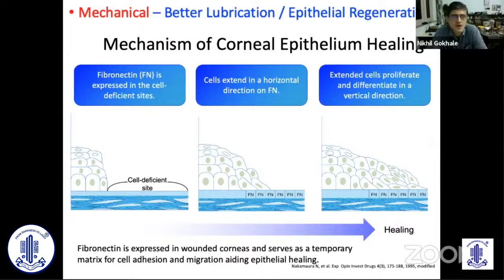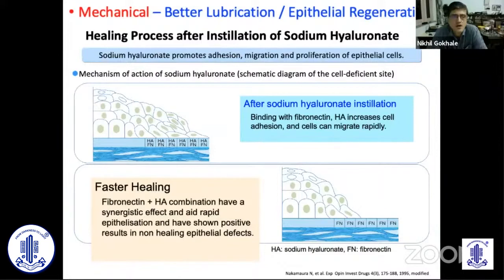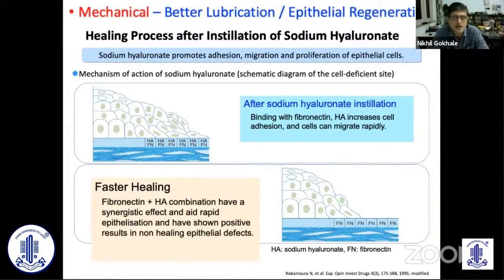When we use exogenous hyaluronic acid as eye drops, there is binding of the hyaluronic acid to the fibronectin which is laid down, and this increases the ability of the epithelium to adhere and cells to migrate rapidly. In the literature it has been shown very clearly that a fibronectin with hyaluronic acid combination has a synergistic effect and aids rapid epithelialization. If you use any agent that blocks the fibronectin or hyaluronic acid molecules, there will be a delay in epithelial healing.